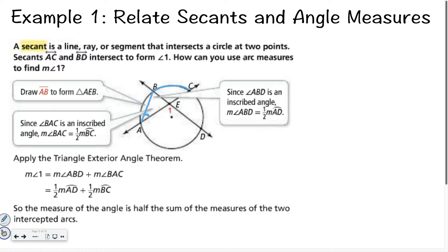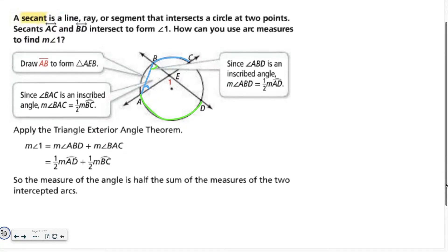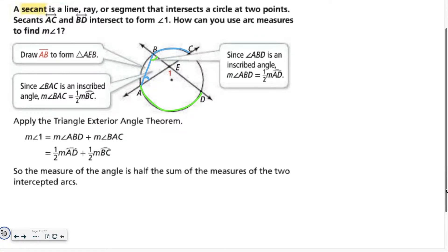We know that angle A is one half of this arc length. And since ABD, this one right here, angle ABD, is also an inscribed angle, we know that it's one half of the arc down here. So, if we can figure out what those arcs are, if we had numbers for them, we would be able to solve this problem.